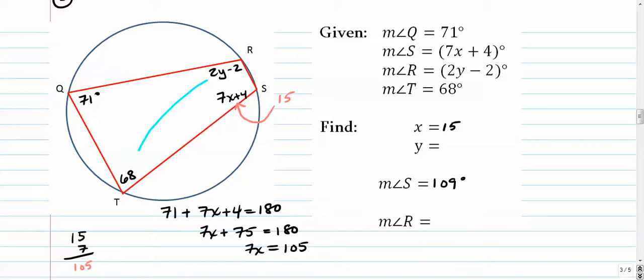All right, the other way. We have angle R and angle T. Angle R and angle T. The rule is that they are, since they're opposites and they're in an inscribed quadrilateral, they are supplementary.